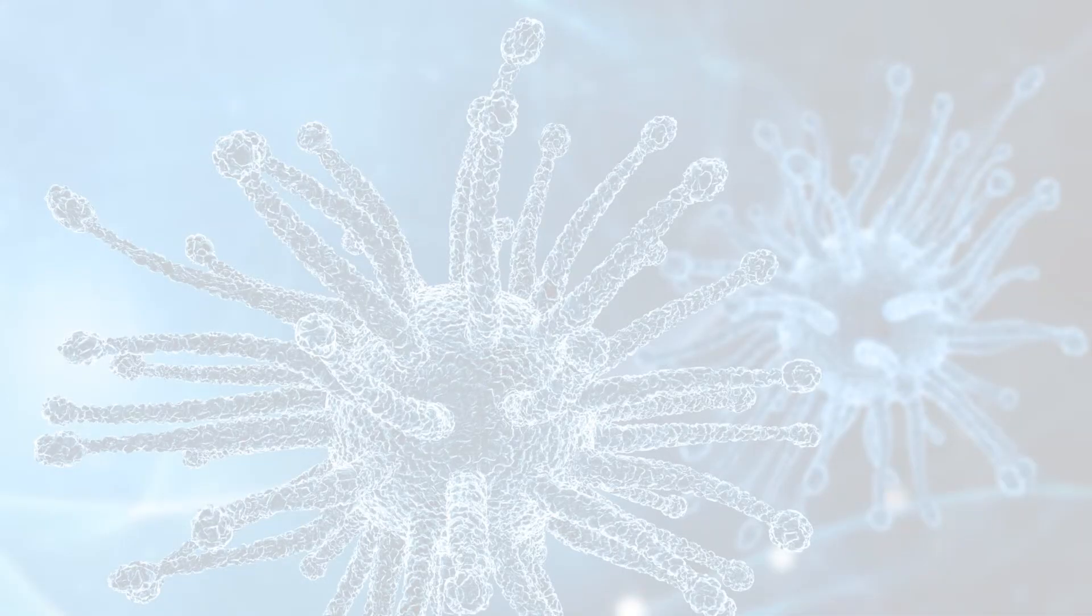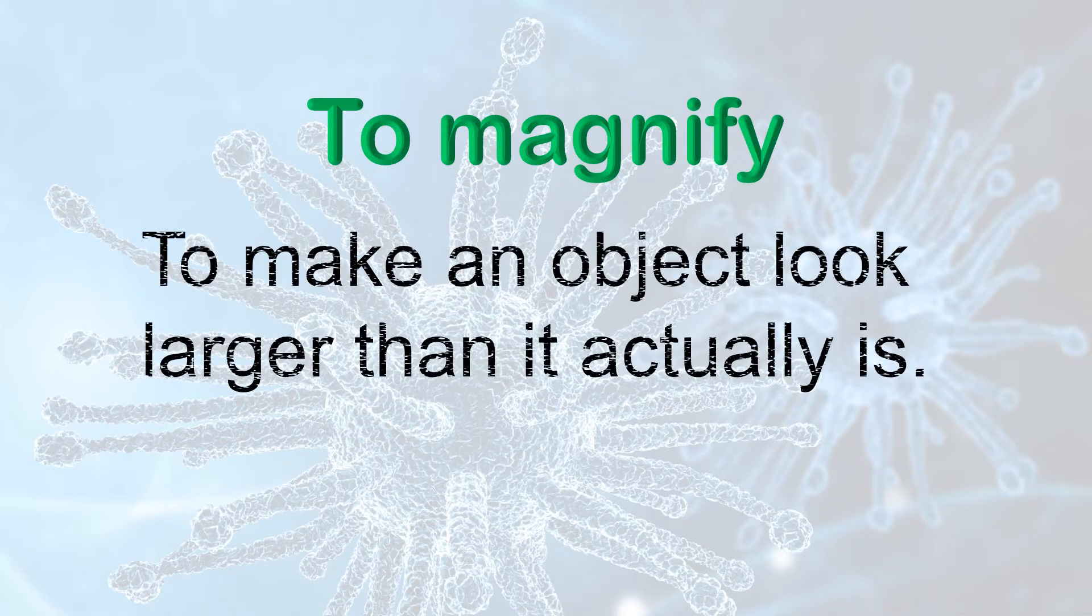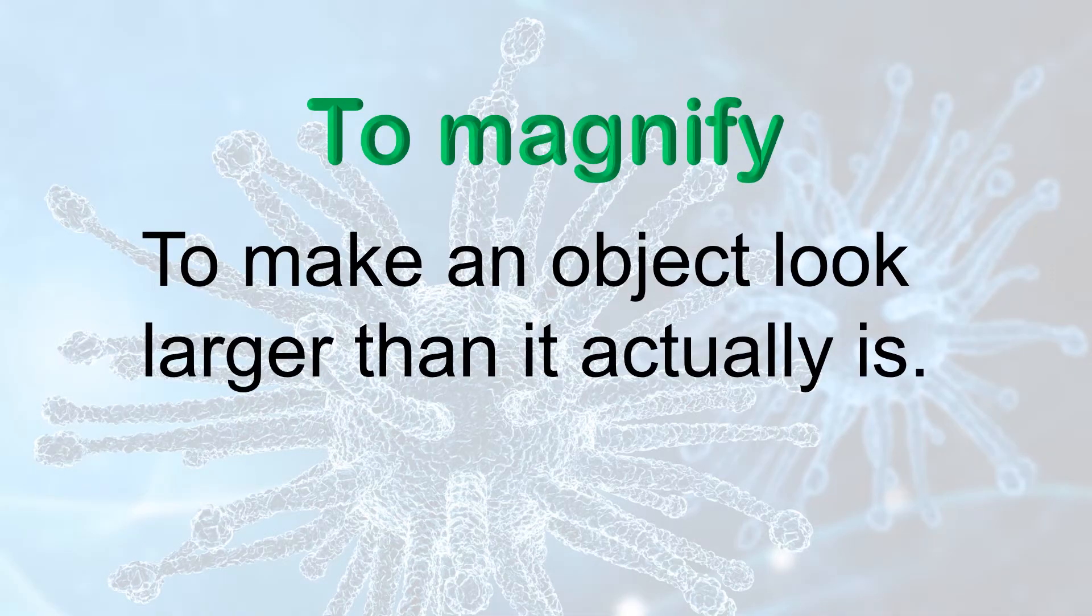Before starting, we need to go over some important science vocabulary that I'll be using in this video, just so you'll understand what I'm talking about. First, let's look at the term to magnify. When we say that a microscope magnifies an object or specimen, we just mean that the microscope makes it look larger than it actually is.